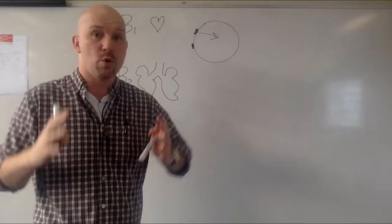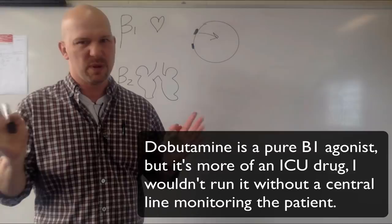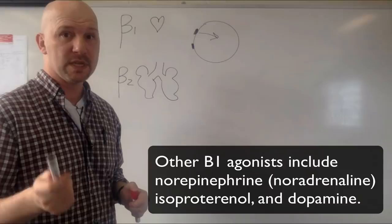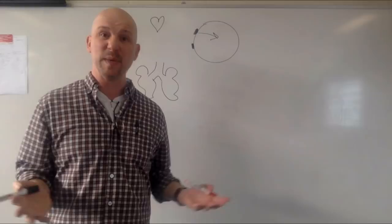We give adrenaline, again, as our beta-1 agonists. There are drugs that work more specifically as beta-1 agonists, but we don't really have a specific beta-1 agonist. We use adrenaline if we want to speed up the heart. And then we're using adrenaline for its beta-1 effect.